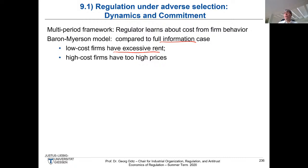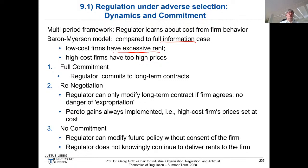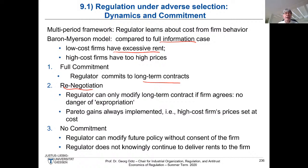In the static one-period setup, the problem was that low-cost firms have excessive rents and high-cost firms have distorted prices upward. Now we look into three cases: full commitment — the regulator commits to long-term contracts for both periods; renegotiation — the regulator can only modify contracts if the firm agrees and Pareto gains are always implemented; and no commitment — the regulator cannot credibly commit to any contract.